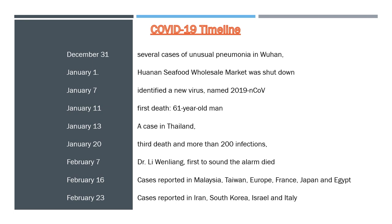On January 20, China reported a third death and more than 200 infections, with cases also reported outside Hubei province including in Beijing, Shanghai, and Shenzhen. On February 7, Li Wenliang, a doctor who was among the first to sound the alarm over the coronavirus in China, died, and Hong Kong introduced prison sentences for anyone breaching quarantine rules.